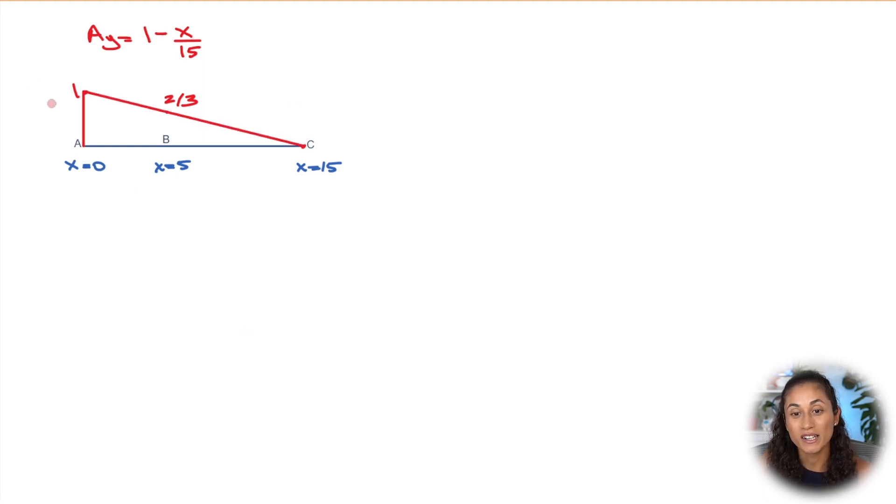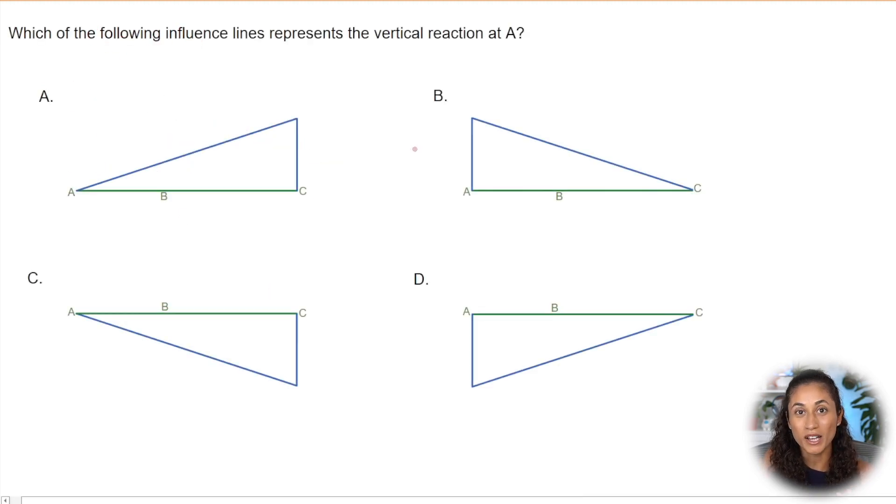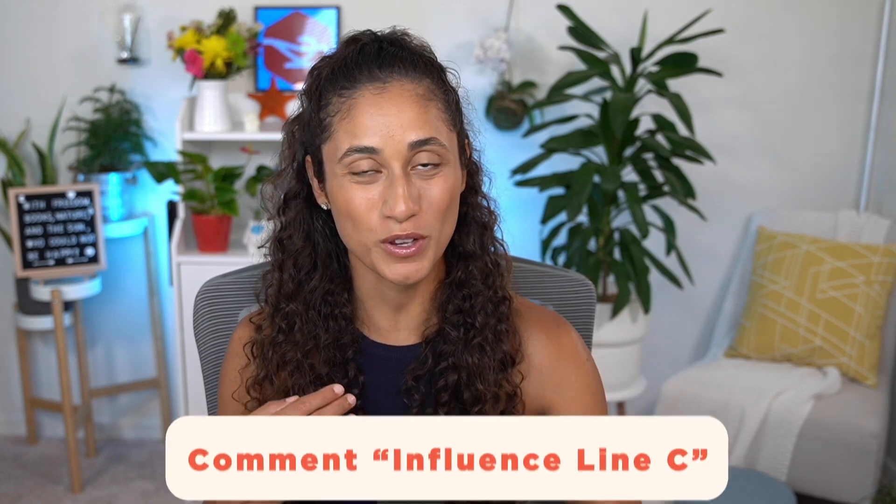Now, once we find the points, the next step is just draw the influence line. Now, if we take a look at the multiple choice, the answer is going to be B. If you guys want to see the influence line for reaction C, go ahead and comment below influence line C.